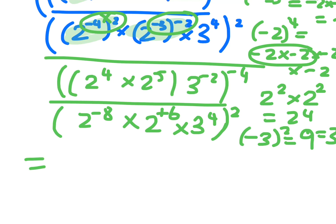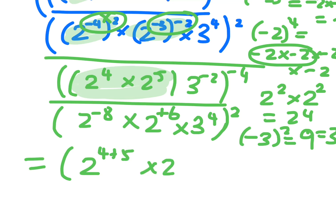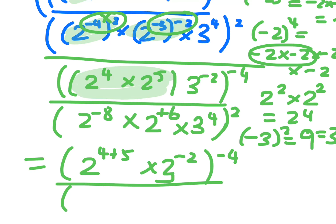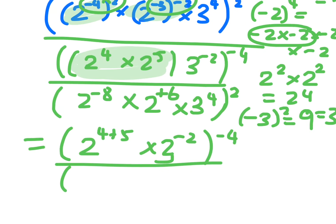Next step is let's go inside these brackets, because you've got to do the brackets first. So 2 to the 4 times 2 to the 5 — add the indices — 4 plus 5 is 9, and that's 3 to the minus 2, all to the minus 4. Then 2 to the minus 8 times 2 to the 6 — minus 8 plus 6 is minus 2 — so that's times 3 to the 4, squared.